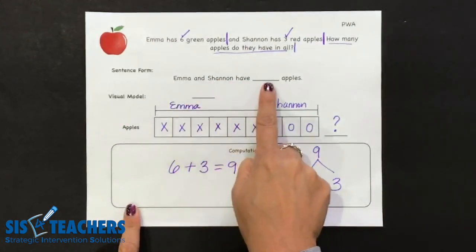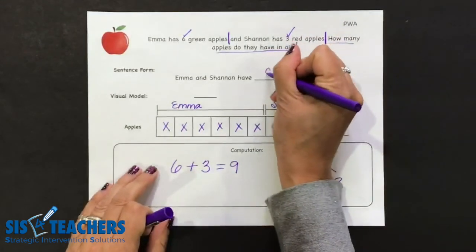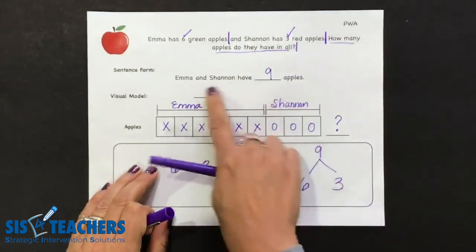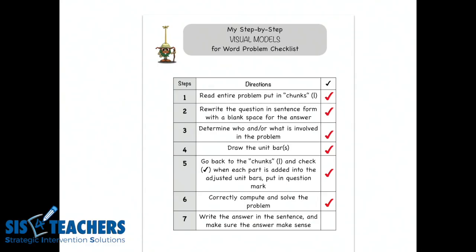We now know that Emma and Shannon have nine apples total, which we fill out that sentence form to complete the journal template. So we'll go back to the checklist one last time and check that we have all of the steps to our model drawing done. This helps kids with a little bit of scaffolding and eventually they become independent.